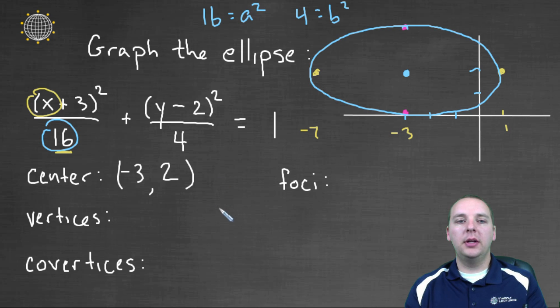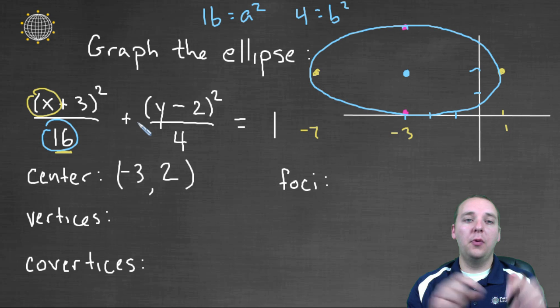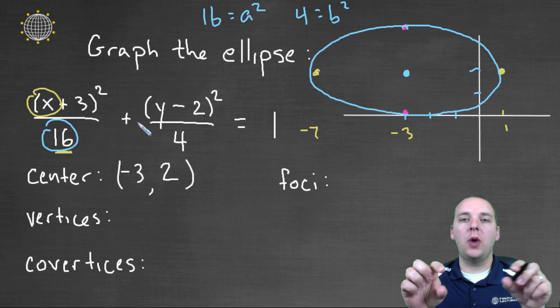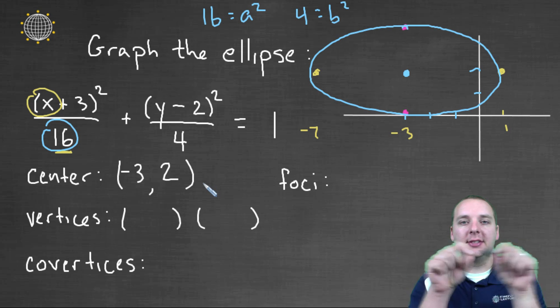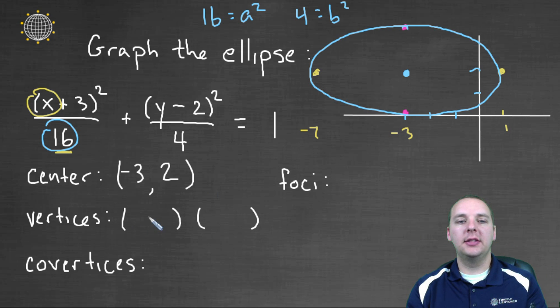So now we have a little bit left to finish up here. First of all, what were the vertices? Well, just because of the form of this ellipse, we know that it was wider than it was tall. So the vertices' y-coordinates are going to be the same as the center's y-coordinate, because they haven't changed—they're on the same horizontal axis there. So this is something comma 2, and something comma 2, just like the center was negative 3 comma 2.